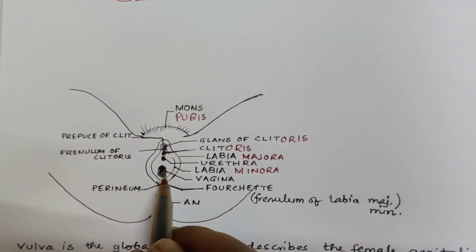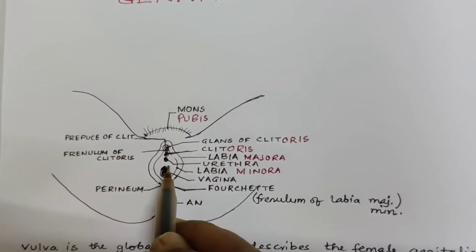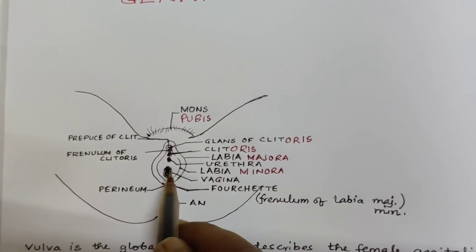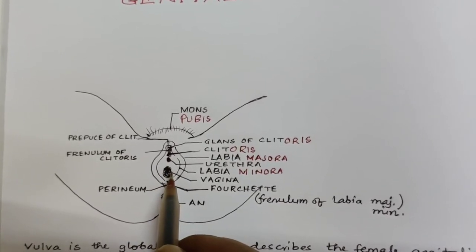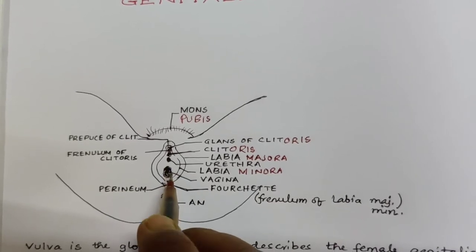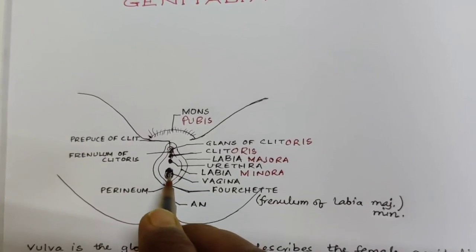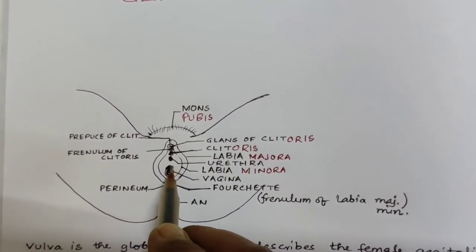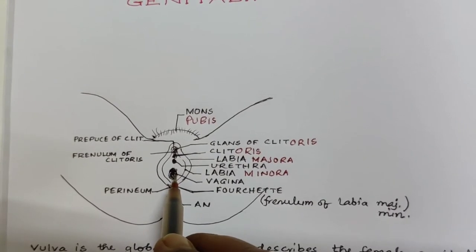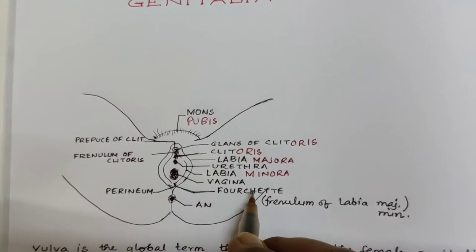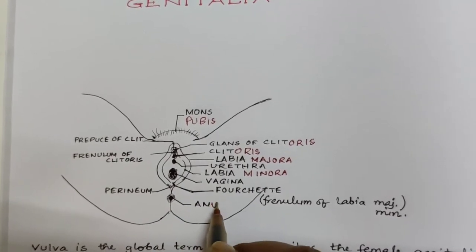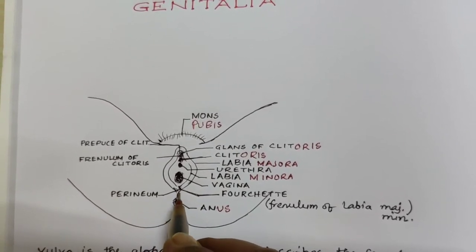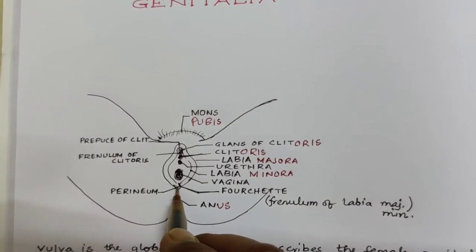The vaginal opening is covered by a membranous sheath called the hymen. Hymen was previously considered a sign of virginity. Nowadays it does not indicate virginity because the hymen can break during athletics or any kind of severe exercise. Previously, women did not go out of their homes, so this was the sign of their virginity. Now this part is known as the fourchette. This is the anus, and this is the perineum — perineum extends up to the anus.